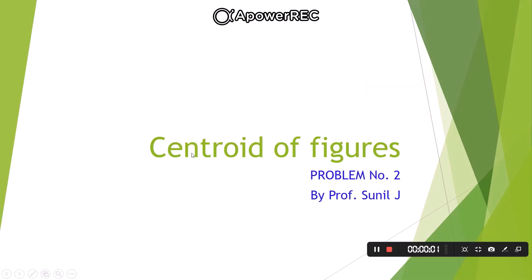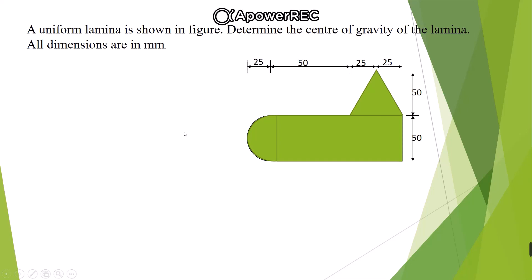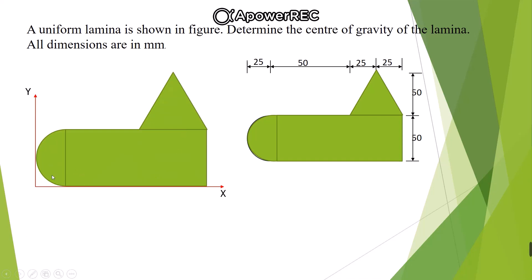Now let us move to the next question. A uniform lamina is shown in the figure — determine the center of gravity of the lamina; all dimensions are in mm. This composite section consists of three simple figures: a semicircular section, a rectangular section, and a triangular section. The first step is to identify the reference axis so the entire section lies in the first quadrant.